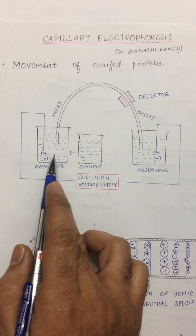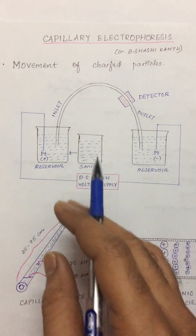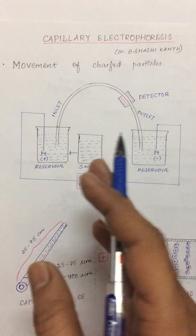The typical buffer solutions are phosphate buffers, acetate, borate, or even some zwitterionic buffers. They have different pH ranges.